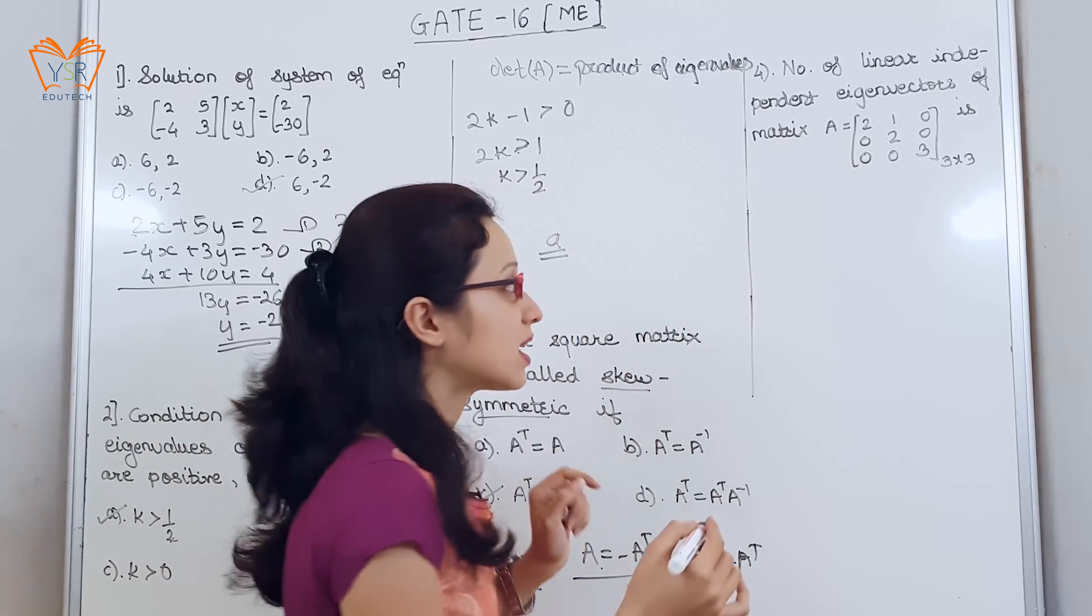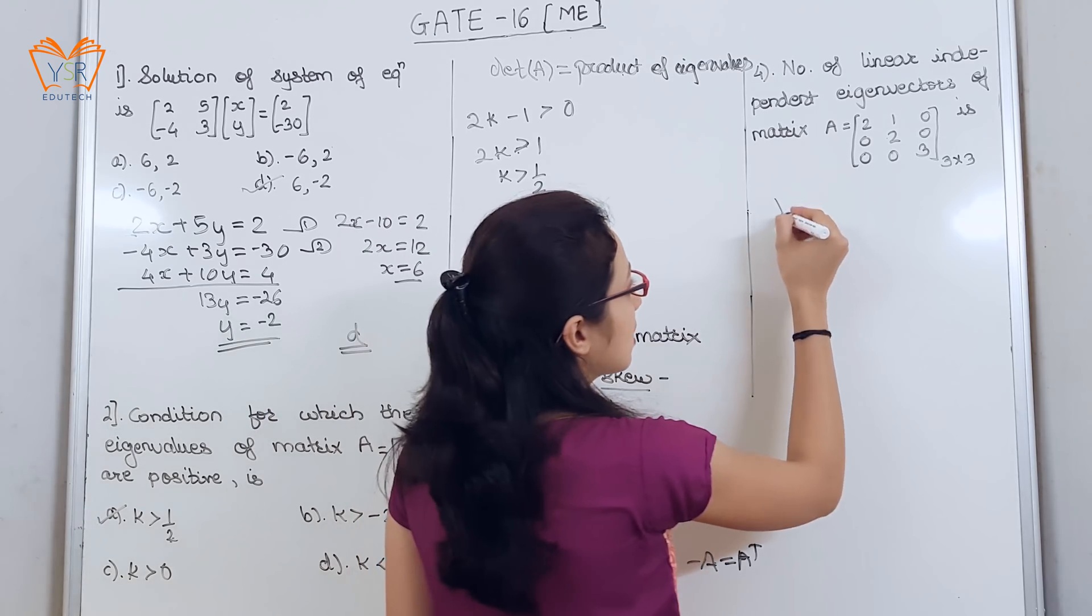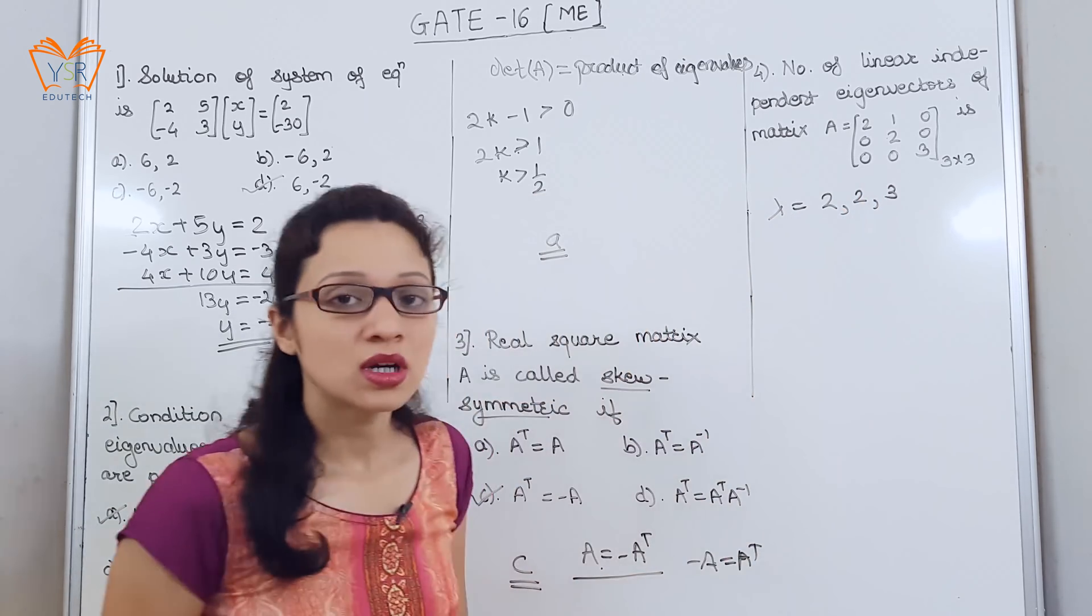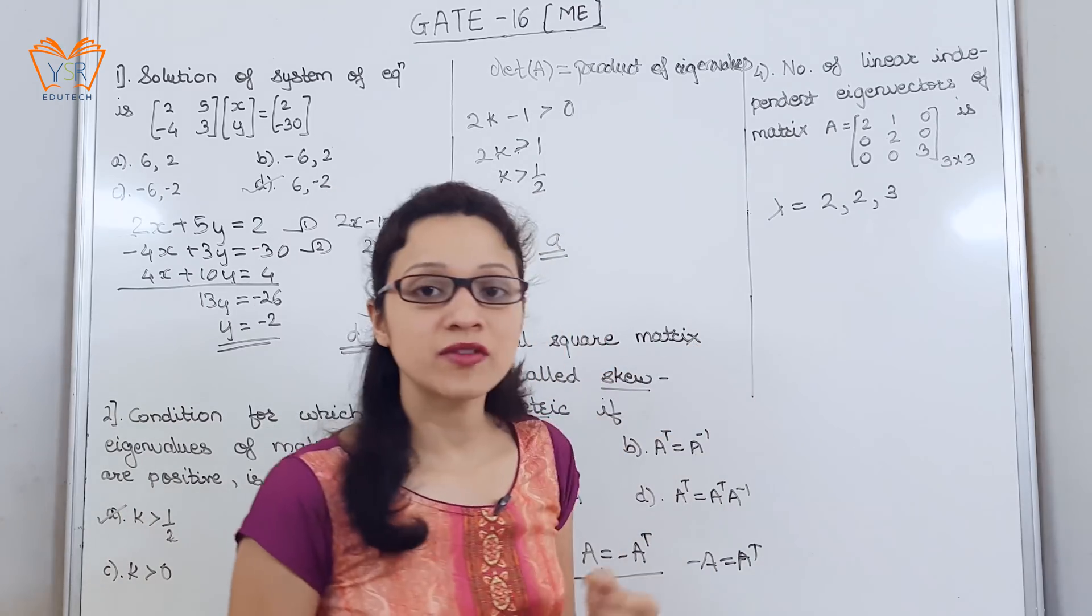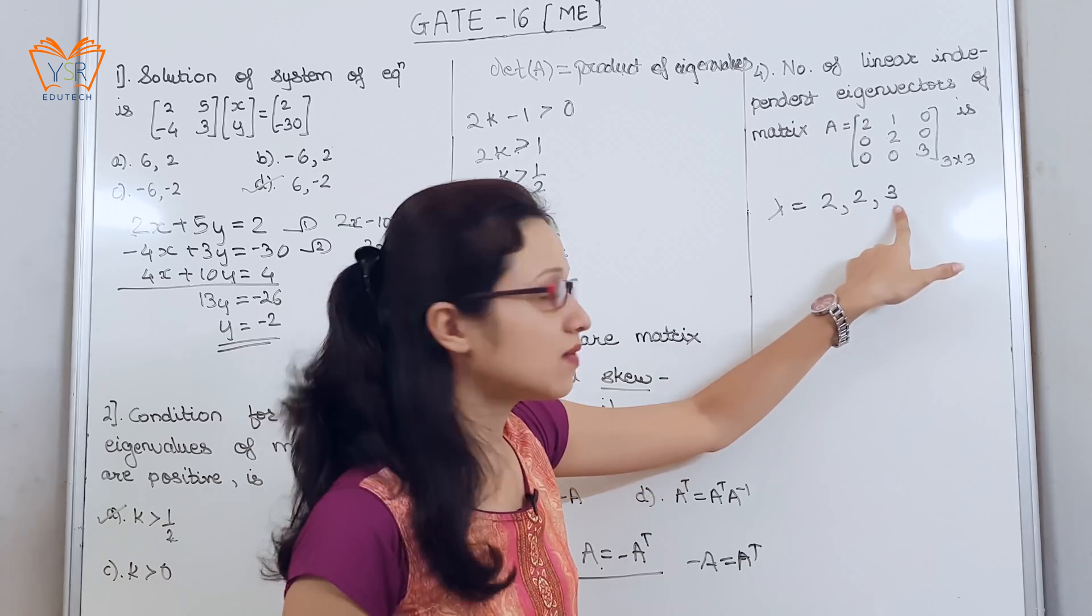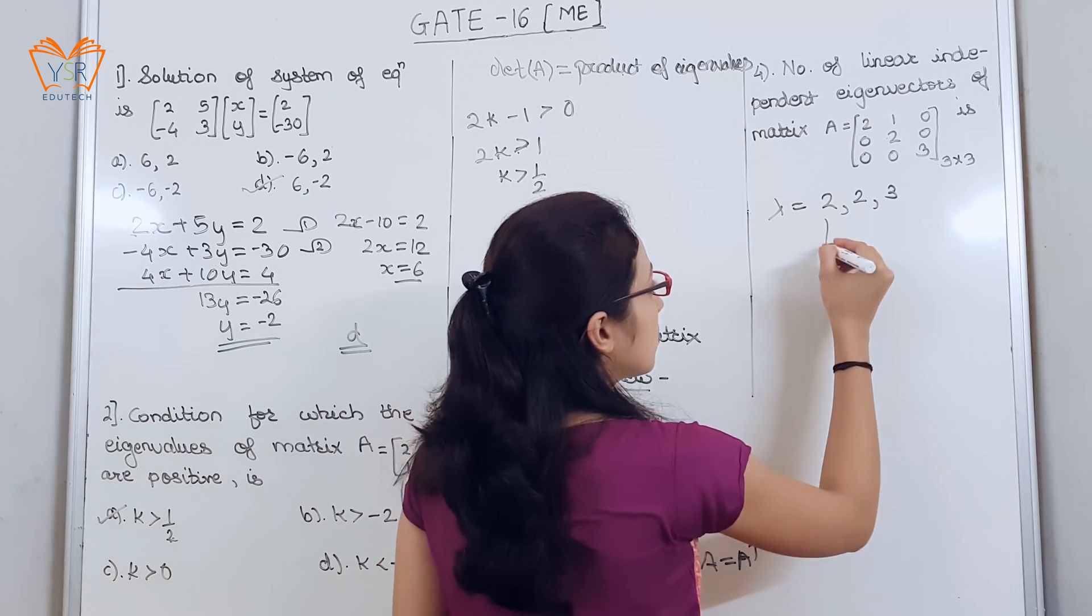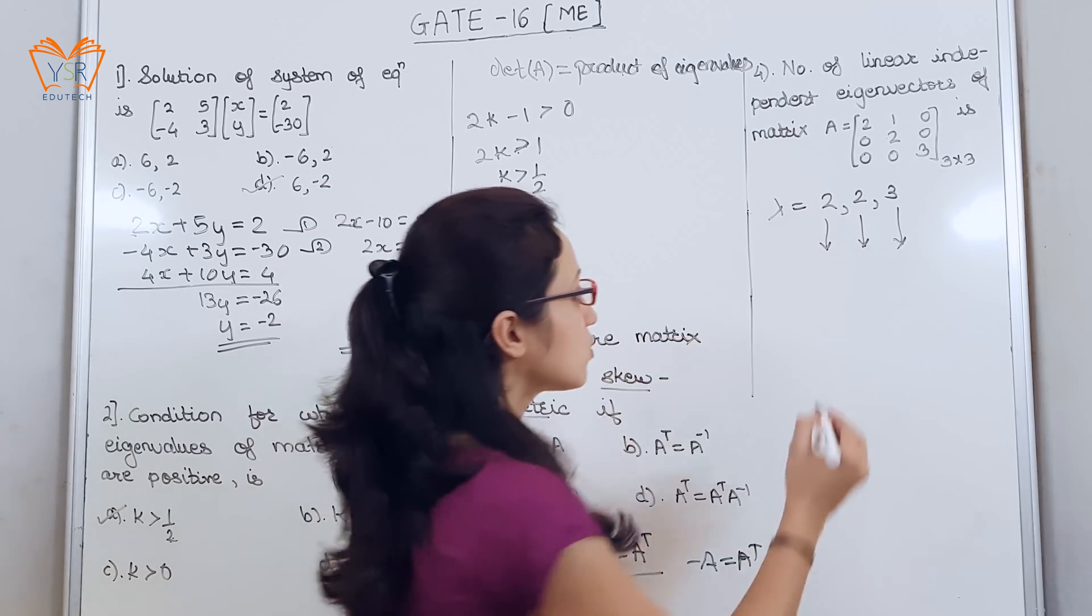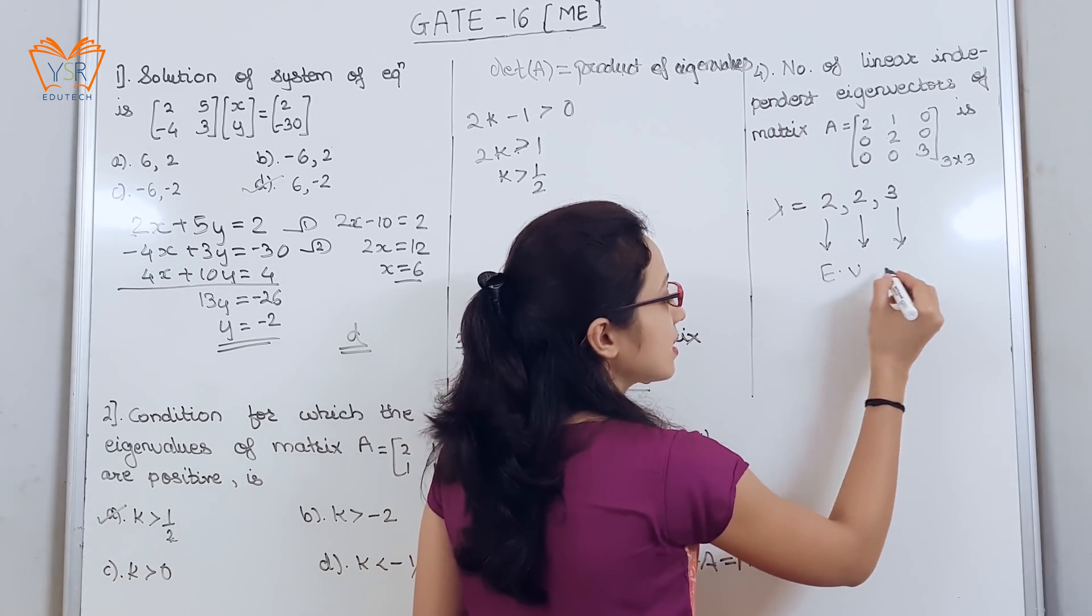...we can directly conclude that the 3 eigenvalues are 2, 2, 3, because we know if the order is 3 by 3, there will be 3 eigenvalues and 3 eigenvectors for each eigenvalue. Now, for these 2 eigenvalues, we will get the same eigenvector.